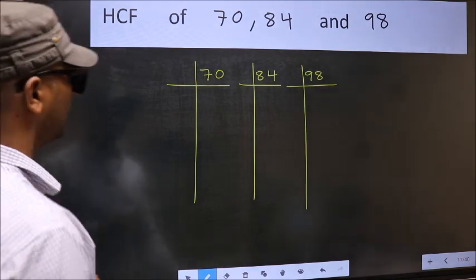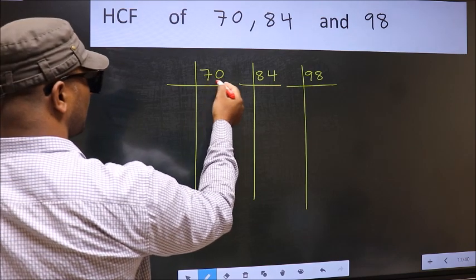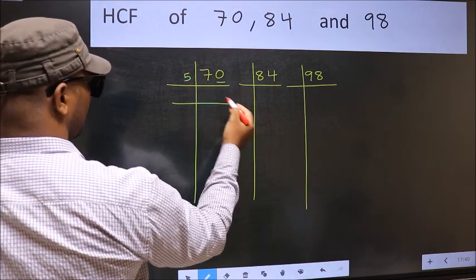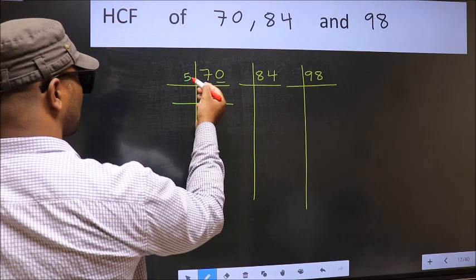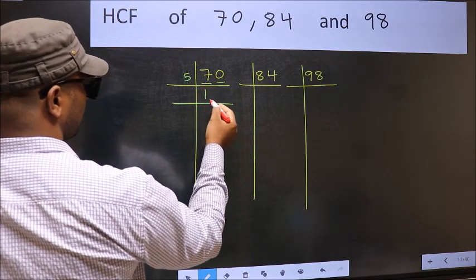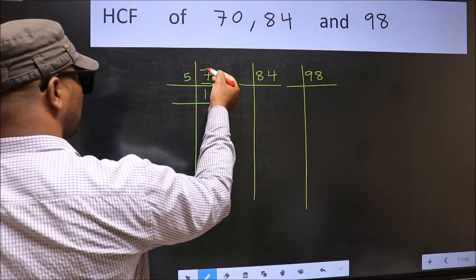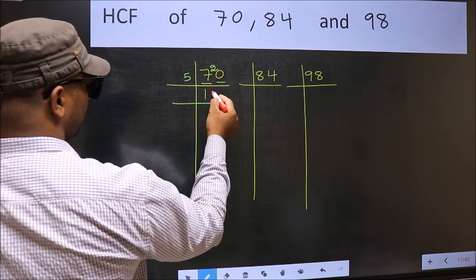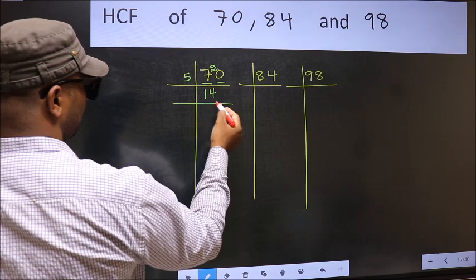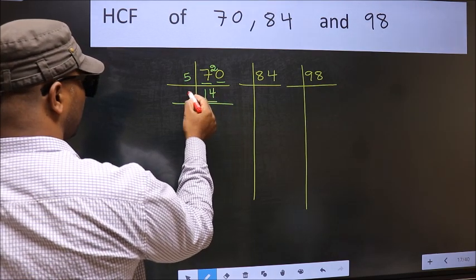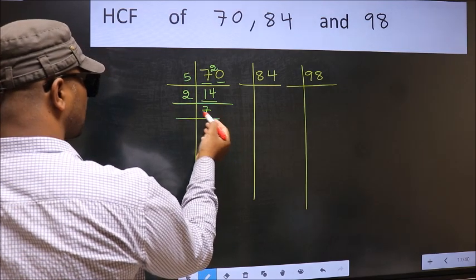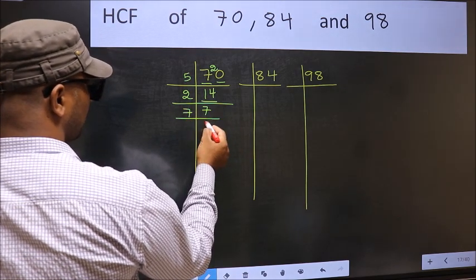Next, in this number, the last digit is 0, so take 5. First number 7, a number close to 7 in the 5 table is 5 once 5. 7 minus 5 is 2, 2 carried forward 20. When do we get 20 in the 5 table? 5 fours 20. Now 14, 14 is 2 sevens 14. Now 7, 7 is a prime number, so 7 once 7.